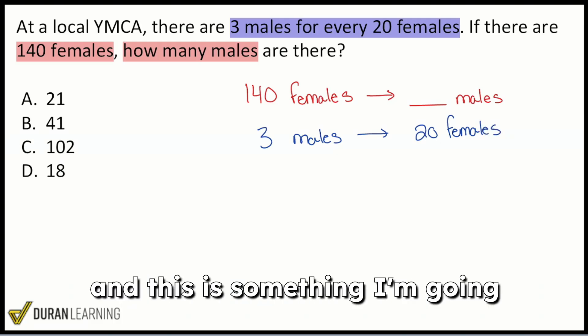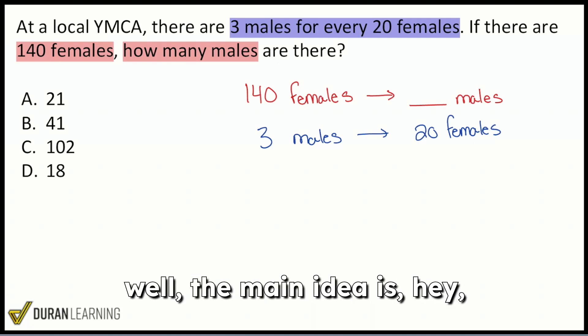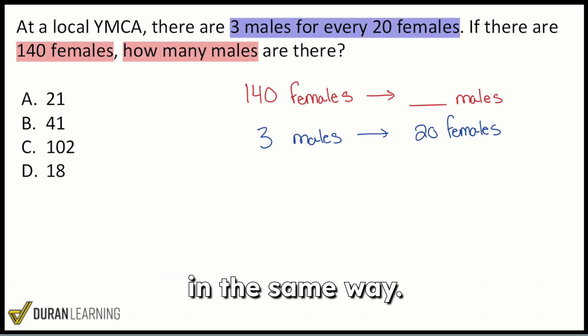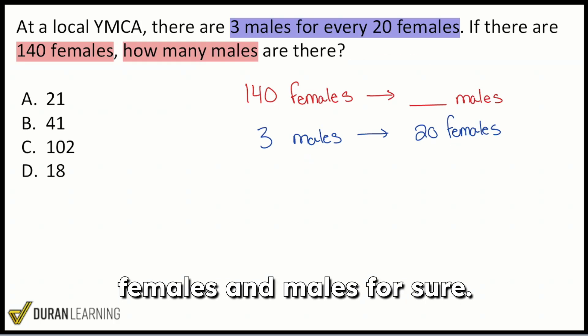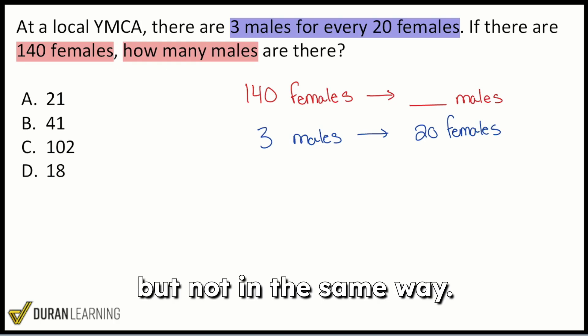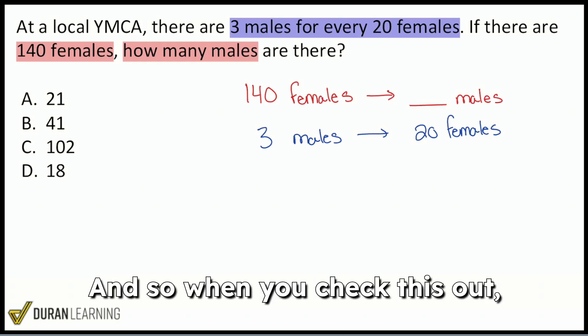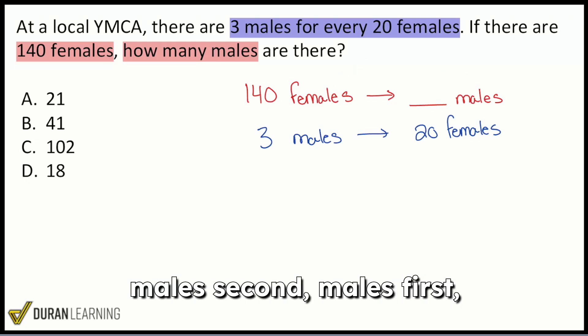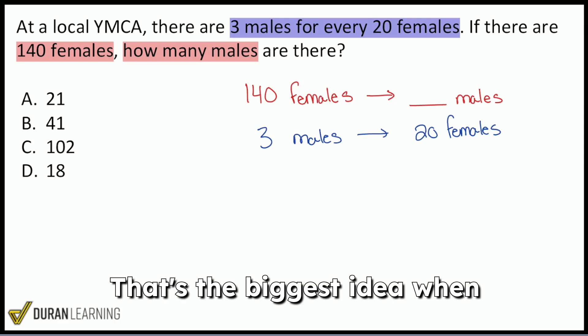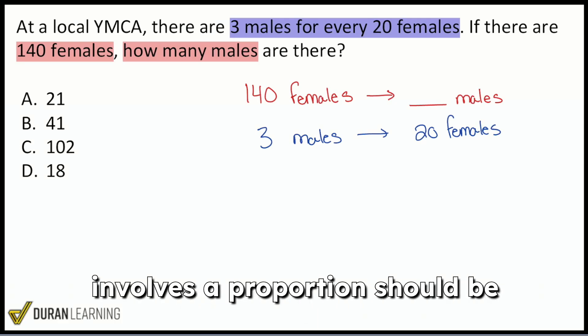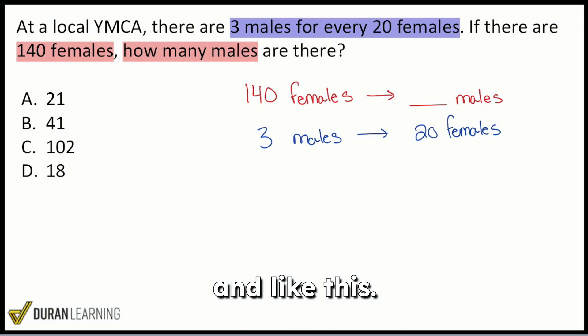But the main idea, and this is something I'm going to show in tonight's class as well, the main idea is, hey, compare the same things in the same way. When we check out the comparison, yeah, we are comparing the same things. We have females to males, females and males, for sure. So same things, but not in the same way. The order really does matter. And so when you check this out, we have females first, males second, males first, females second. So there's the difference here, my party people. That's the biggest idea when it comes to proportions. And every single problem that involves a proportion should be set up consistently like this.